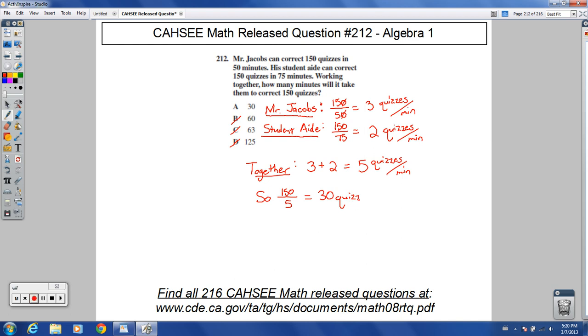Wait, not how many quizzes—30 minutes! Yeah, there we go. 30 minutes to grade 150 quizzes when grading together. So number 212—I'm in the 200s now. Number 212, choice A is the correct choice, just as we suspected it would be.